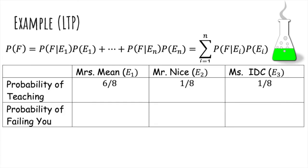Let's look at it. The probability of having Mrs. Mean is 6/8, Mr. Nice is 1/8, and Ms. I-don't-care is 1/8. And the probability they fail you is as follows. I think I would be pretty unhappy, because I have Mrs. Mean with high probability, and she will definitely fail me. So that's not good.